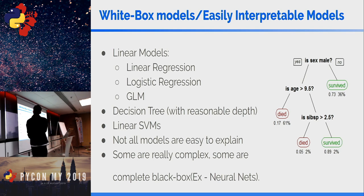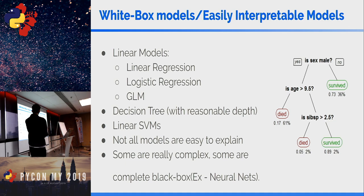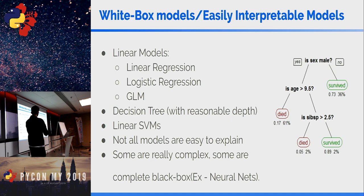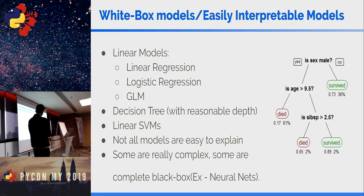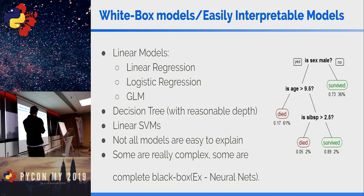Let's talk about models that are easily interpretable — what we can call white box models. Linear models such as linear regression, logistic regression, or generalized linear models come with a weight associated with each feature, so you can interpret the weight value for any given feature. Decision trees use nested if-else conditions, and with a reasonable depth they're fairly easy to interpret. Linear SVMs, if using a linear kernel, can also be interpreted pretty easily.